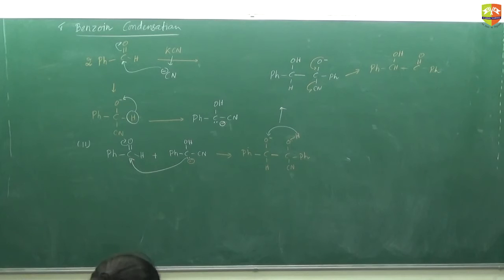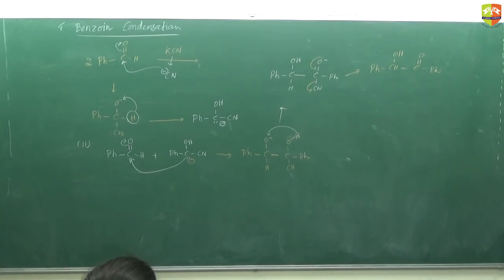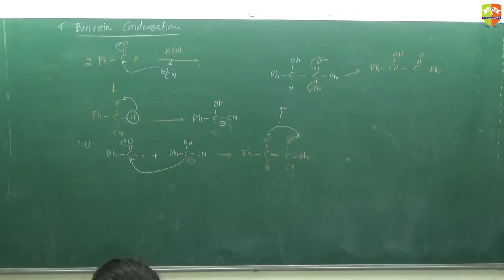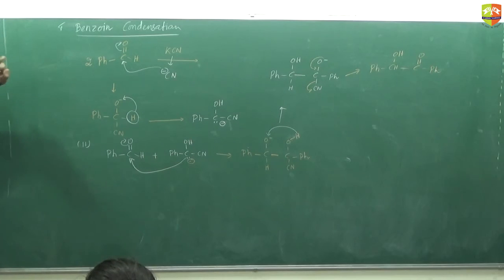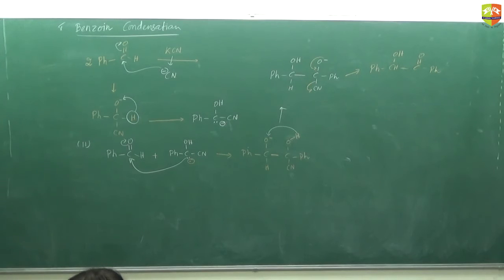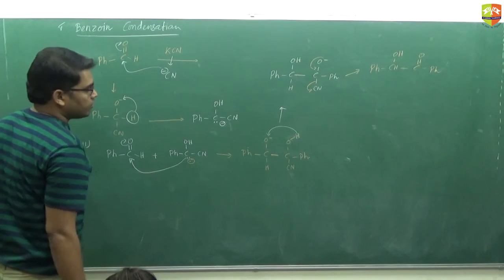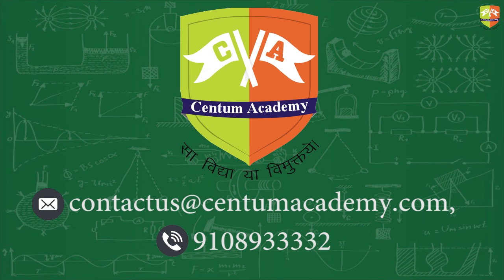Remember, in the exam they won't give you the name of the reaction — they won't say benzoin condensation, Perkin reaction, Cannizzaro, Aldol, or Reformatsky. You need to identify it yourself. For that, you need to memorize the reagent for each named reaction. Benzoin condensation: the reagent is KCN.